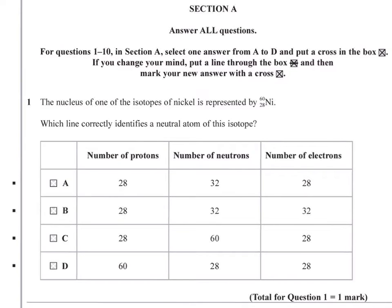Question 1. The nucleus of one of the isotopes of nickel is represented by 60-28 Ni. Which line correctly identifies a neutral atom of this isotope?